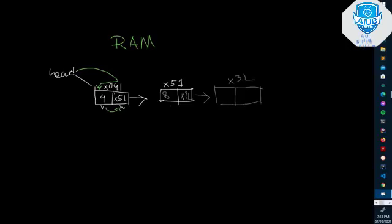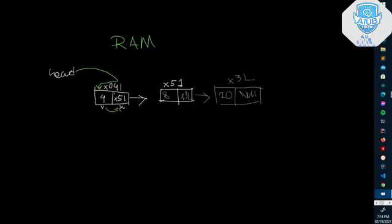Suppose the next memory location is thirty and the value is twenty, then value thirty is pointed to. To insert an element, you first create a new node. Then you insert the data entry by adjusting the head pointer to include the new element.